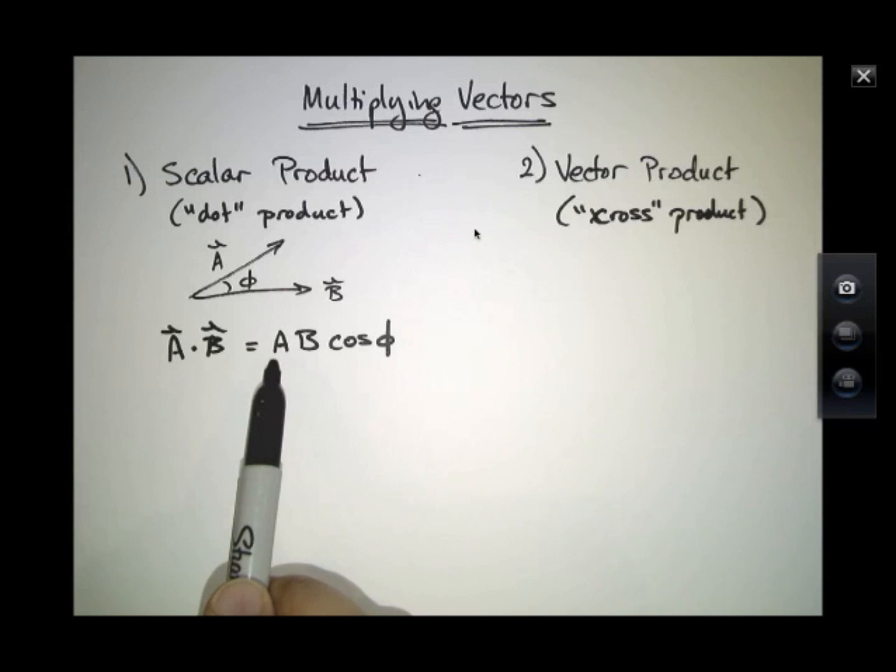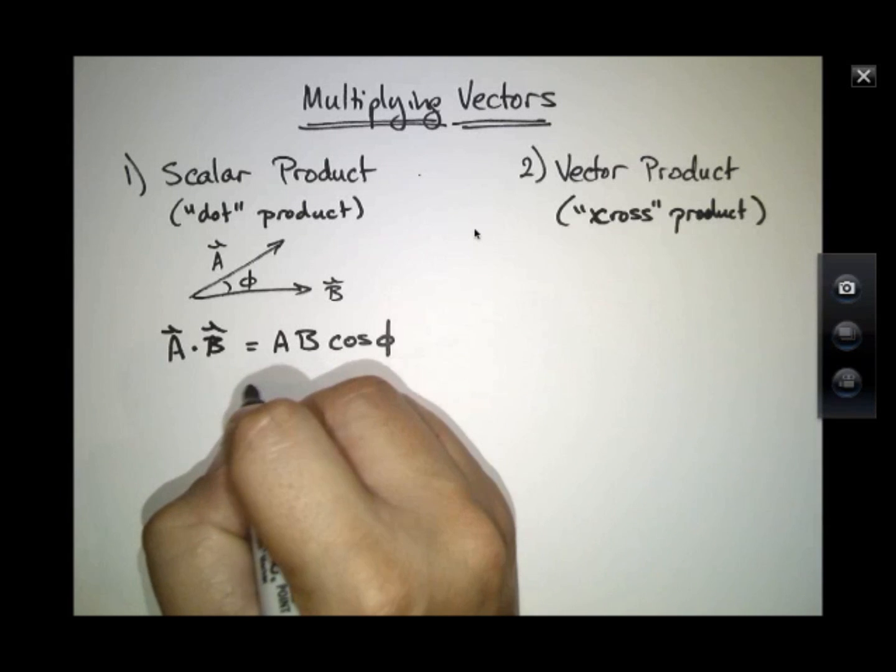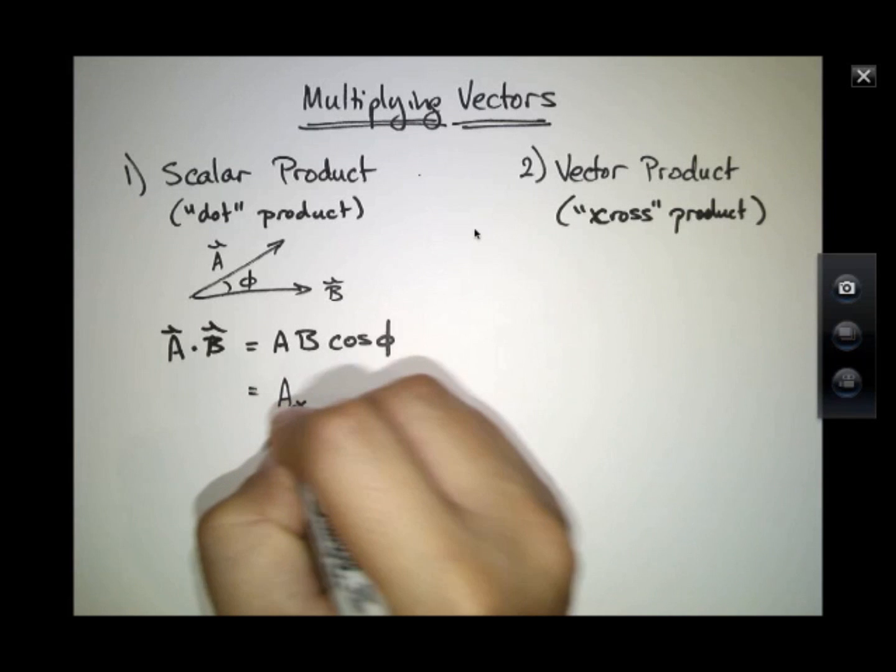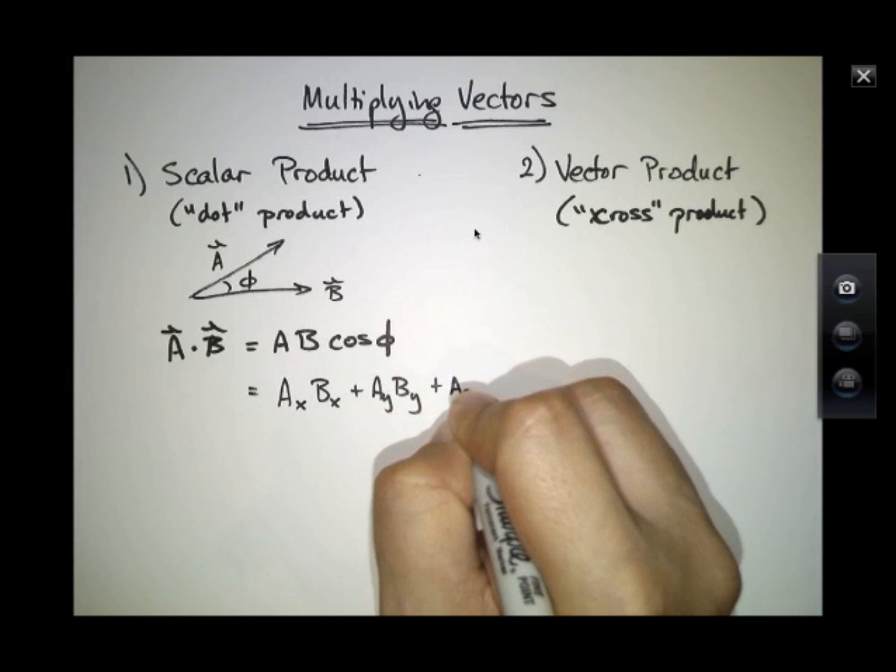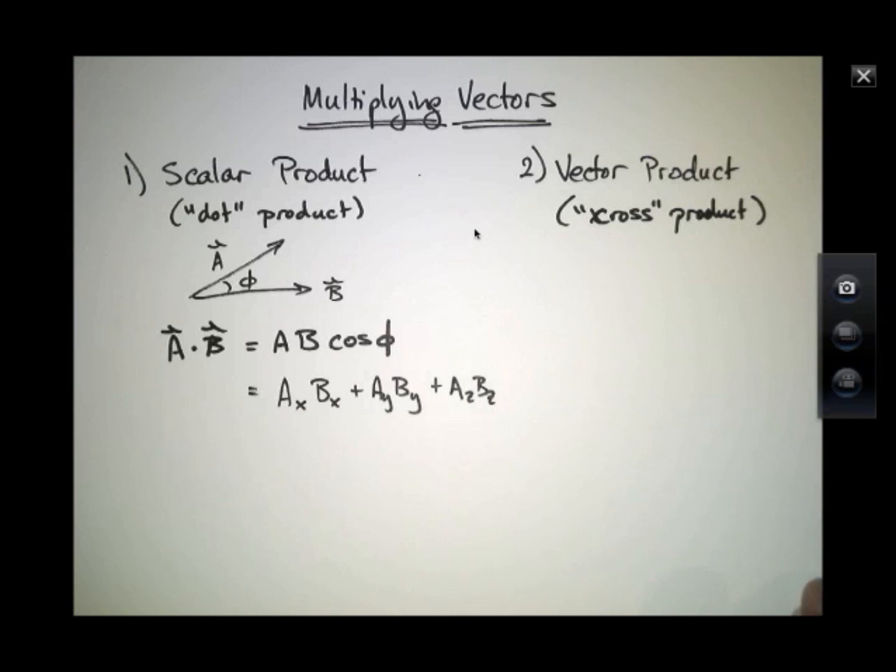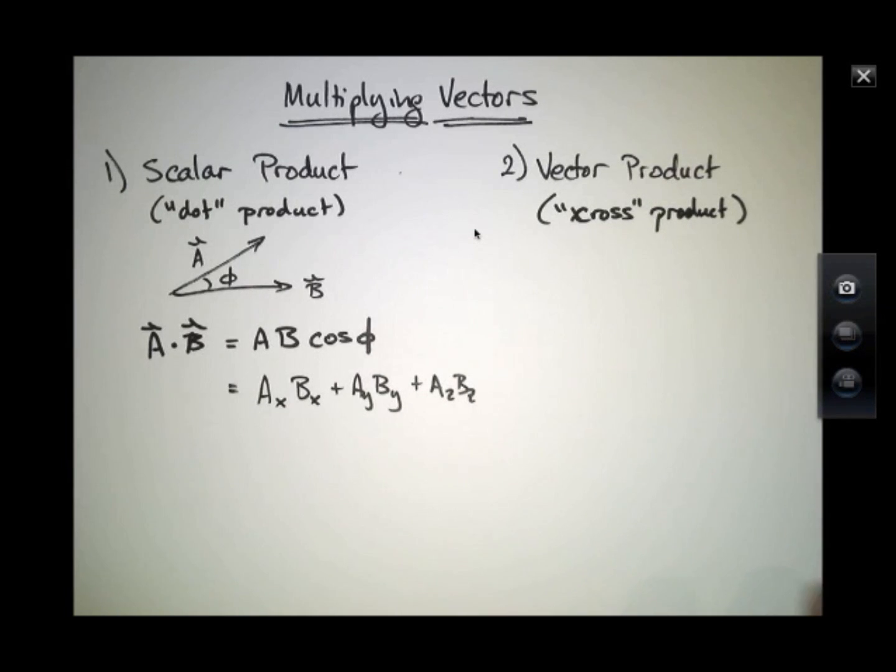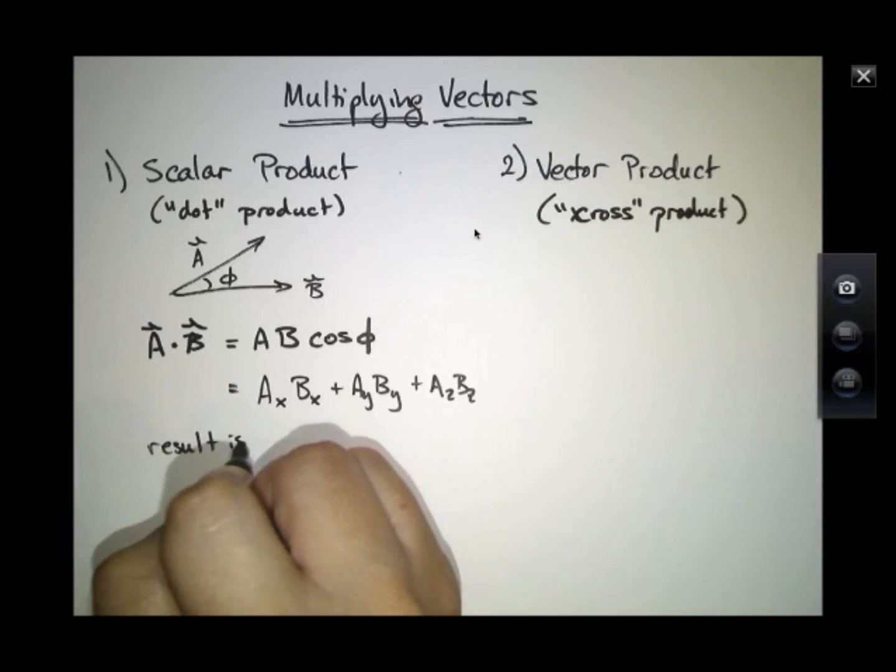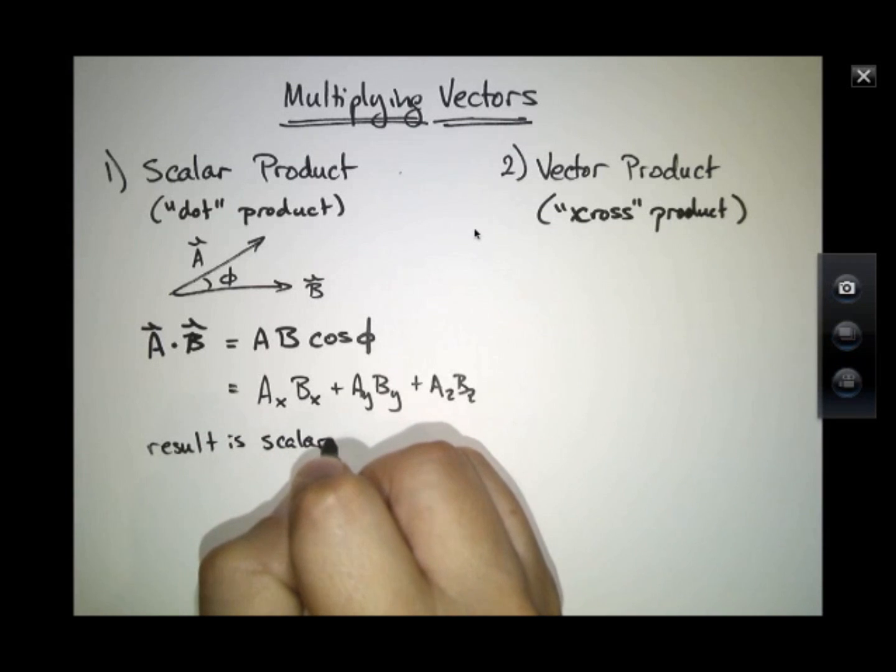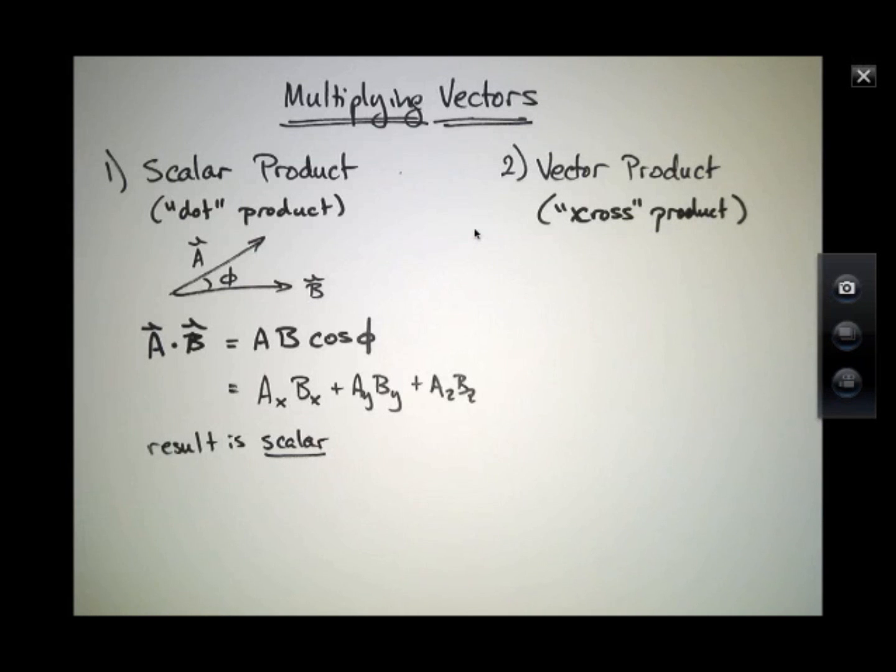So if I happen to know the magnitude of A and the magnitude of B and the relative angle between them, I can compute this dot product rather easily. There's another technique, which is if you know the components of A and B, I can simply multiply the components out: AX times BX plus AY BY plus AZ BZ. Again, the result is a scalar.